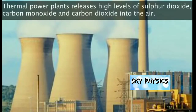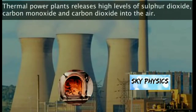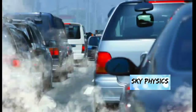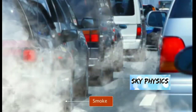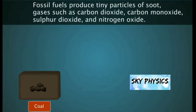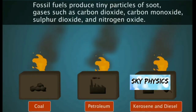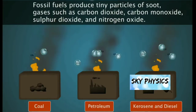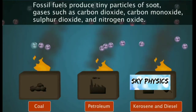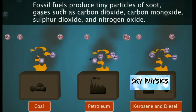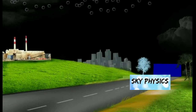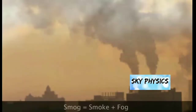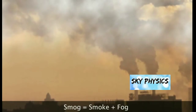Power plants emit tiny ash particles into the atmosphere, which is very harmful for humans. Thermal power plants release high levels of sulphur dioxide, carbon dioxide, and carbon monoxide into the air. Fossil fuels produce tiny particles or soot along with gases such as carbon dioxide, carbon monoxide, sulphur dioxide, and nitrogen dioxide. When these gases mix together, they are the cause of acid rain.